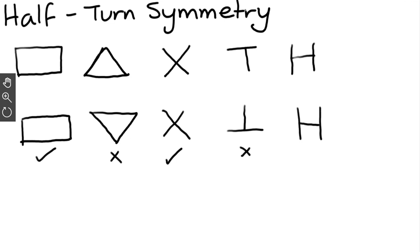Half-turn symmetry means if you can rotate the shape 180 degrees around and it still looks the same, then it does have half-turn symmetry. Sometimes you're asked to draw shapes that have half-turn symmetry.